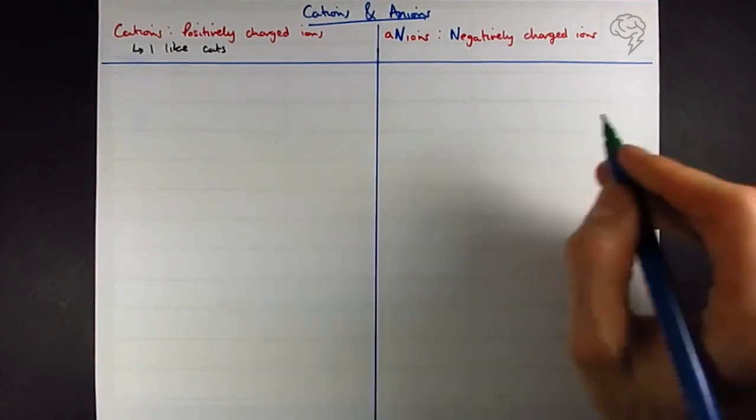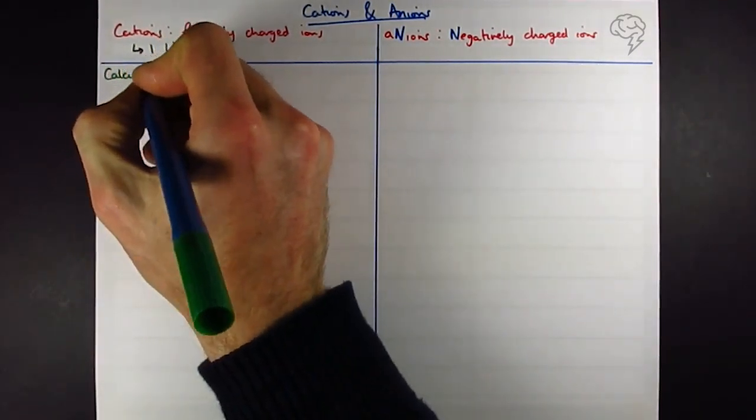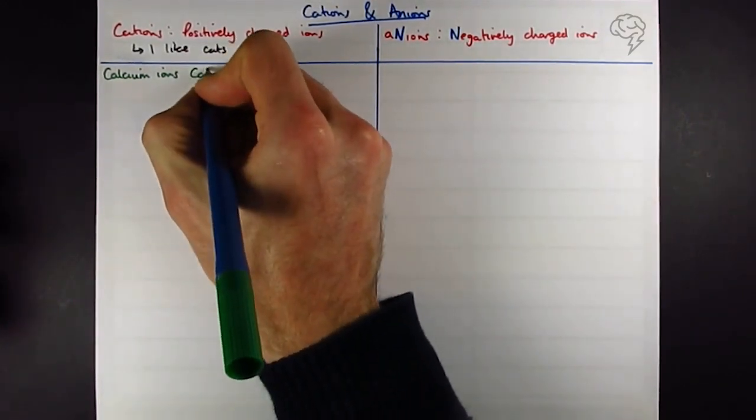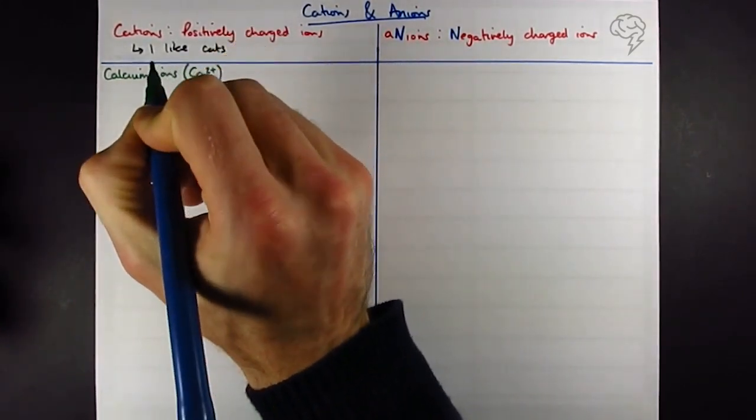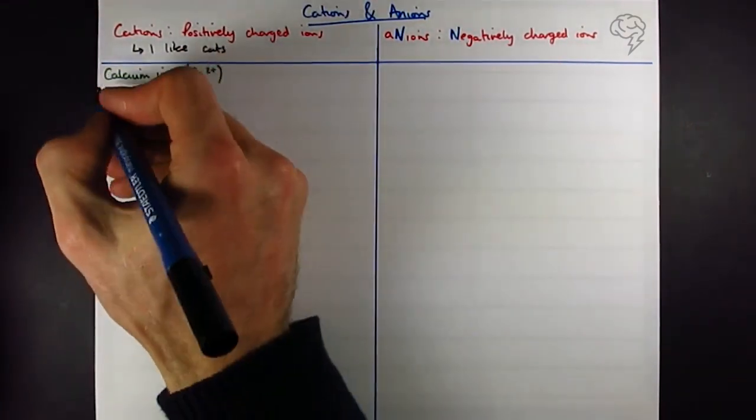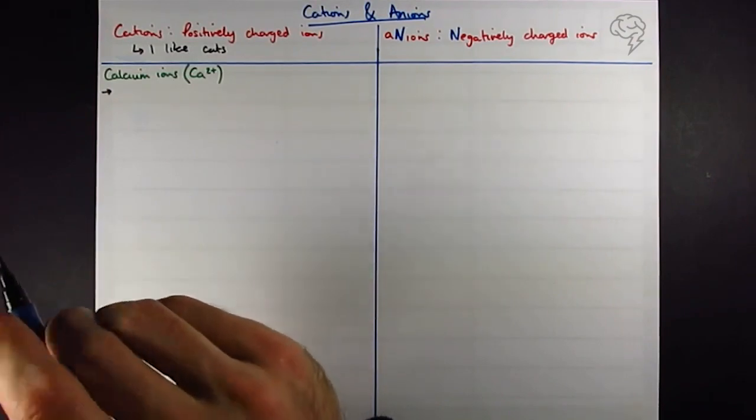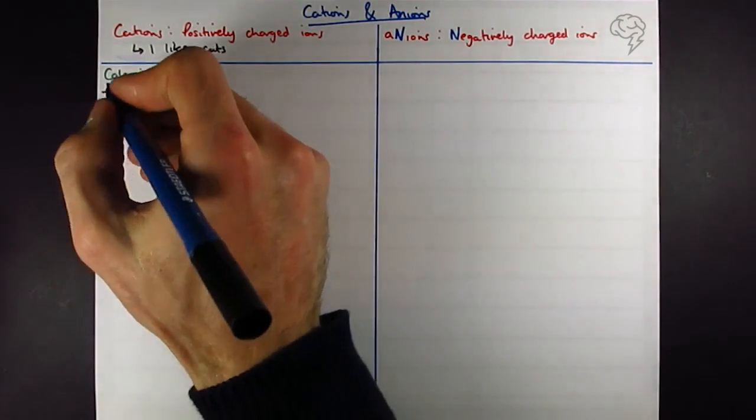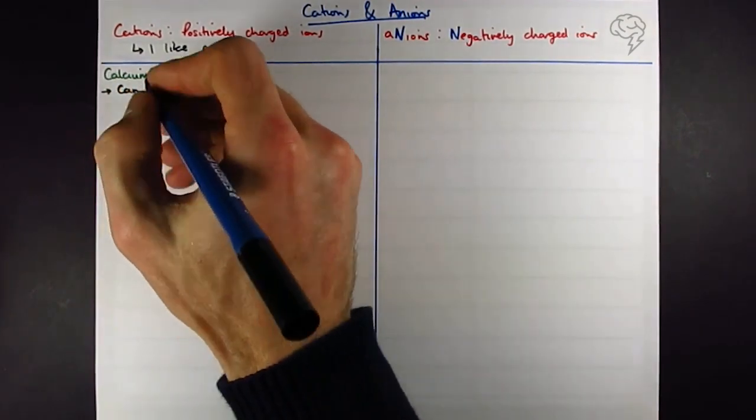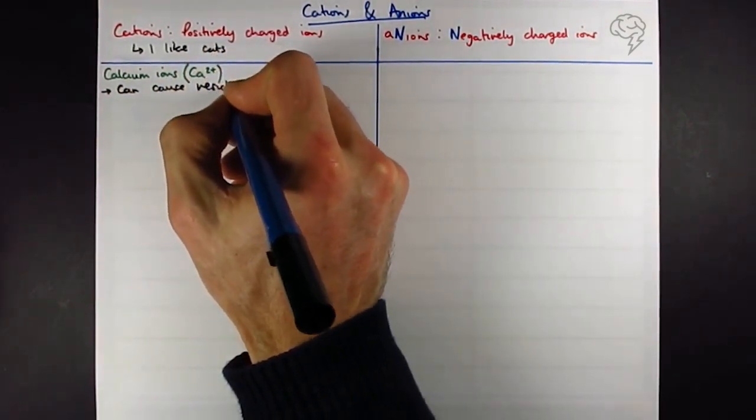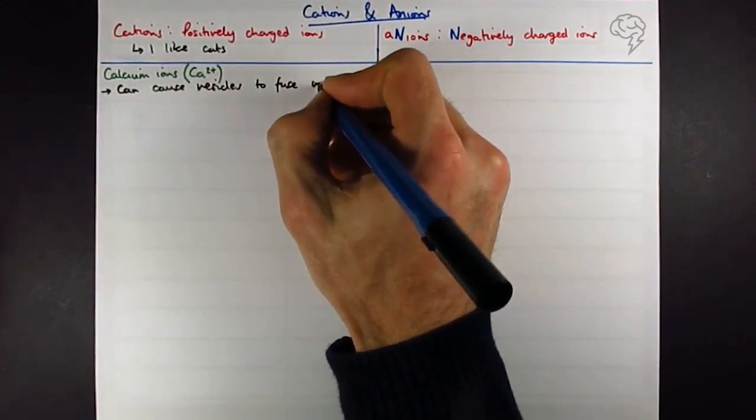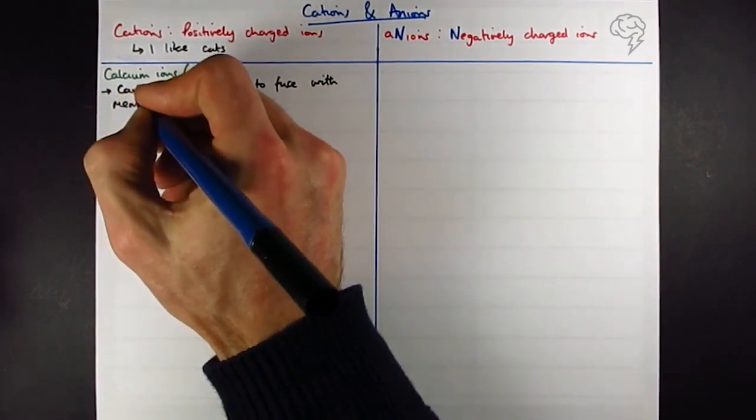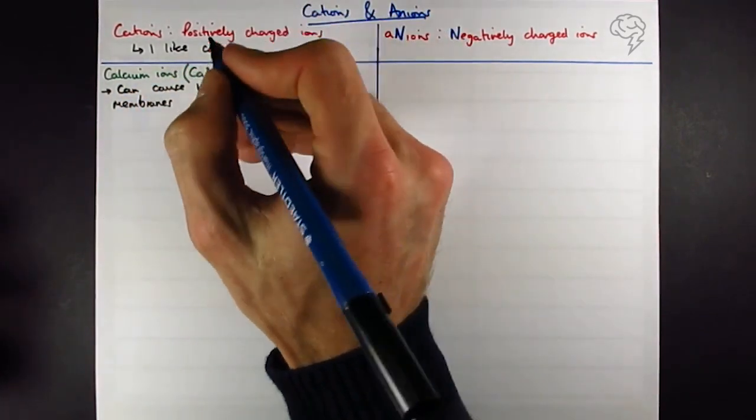Ca2+ is what calcium ions are. So what do you need to know about calcium ions? How are they involved in biology? Well, they cause vesicles to fuse with membranes, so synapses is the classic example there. So synapses or exocytosis.